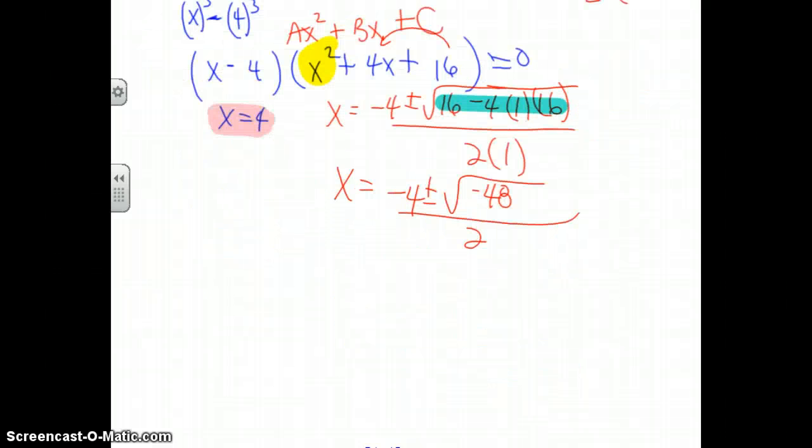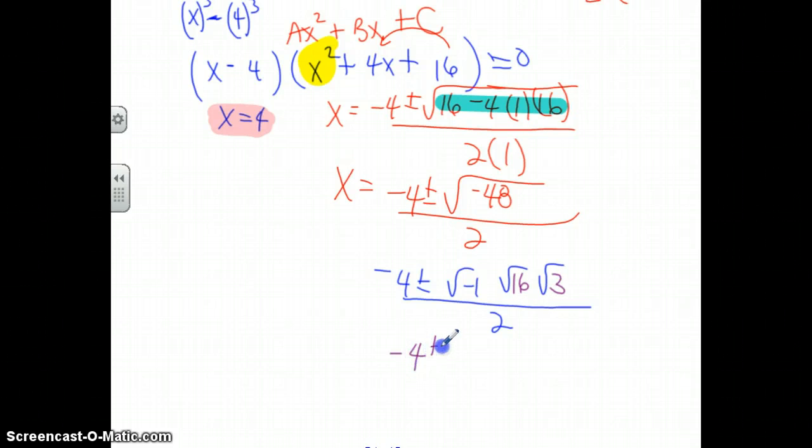So I'm checking for things like 2 times 24, 4 times 12 is not bad because 4 is a perfect square, but I think I can come up with a higher perfect square. Let's try 16 and 3. I'll get to the final answer a little bit faster. So this is negative 4 plus or minus i times the square root of 16 times the square root of 3, all divided by 2.